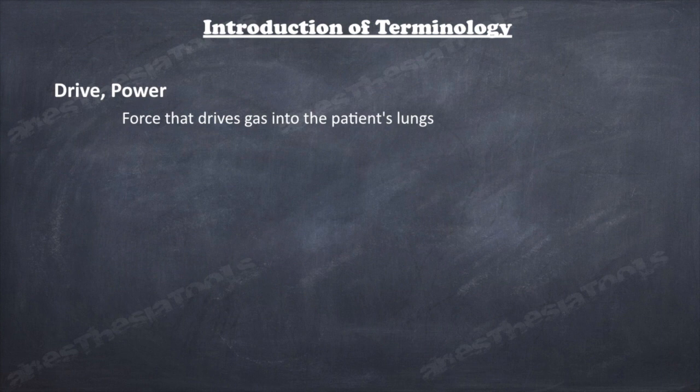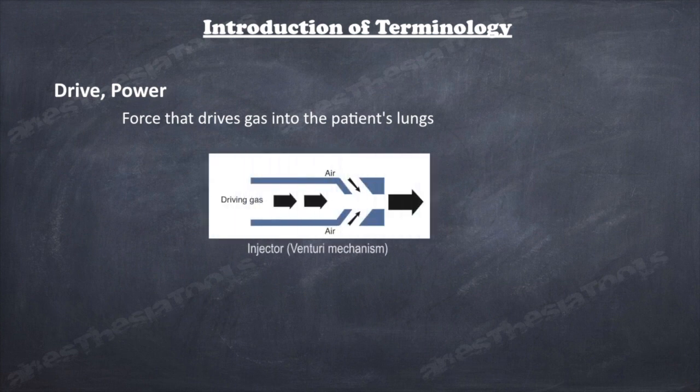First, power source—the force that drives gas into the patient's lungs. It can be either compressed gas or electricity. Many currently available anesthesia ventilators are pneumatically powered but electronically controlled. The driving gas is oxygen, air, or a mixture. A clinical point to remember: using a gas cylinder to power a pneumatic ventilator will quickly deplete the gas supply.